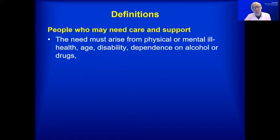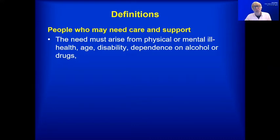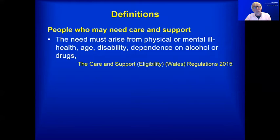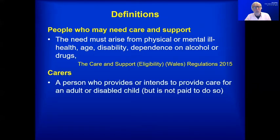In the regulations, it goes on to explain that the need for care and support must arise out of a physical or mental illness, ill health, age, disability, or dependence on alcohol or drugs. A carer used to be defined as somebody who provided unpaid, regular and substantial care, but in the 2014 Act it's simply somebody who provides care unpaid — it doesn't have to be regular and substantial.